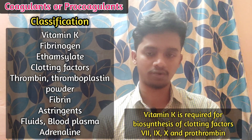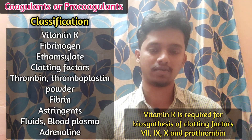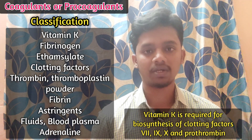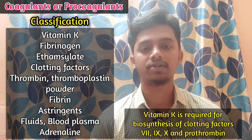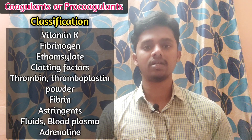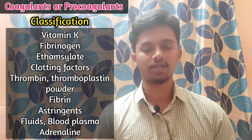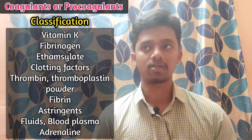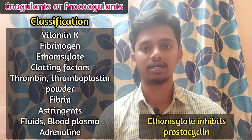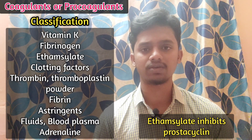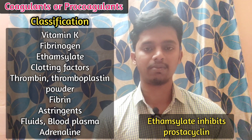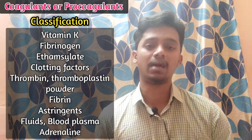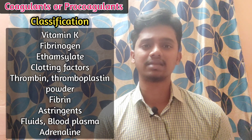If we have external Vitamin K available, it promotes the synthesis of clotting factors, which promotes coagulation — so Vitamin K acts as a pro-coagulant. Fibrinogen is the most predominant substance in coagulation. Ethamsylate is an oral coagulant drug; its exact mechanism is not fully known, but the proposed mechanism is by inhibiting prostacyclin, thereby promoting coagulation. These are different mechanisms by which these substances act.